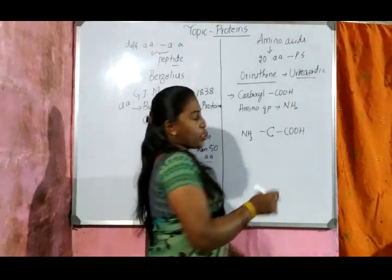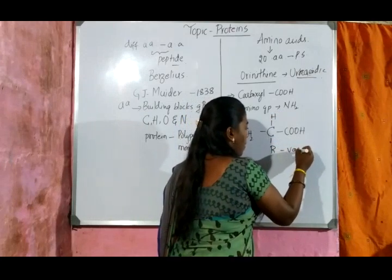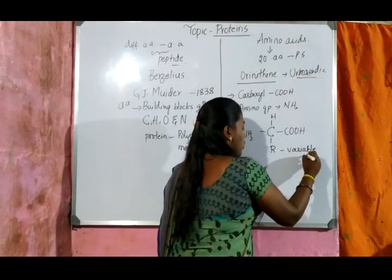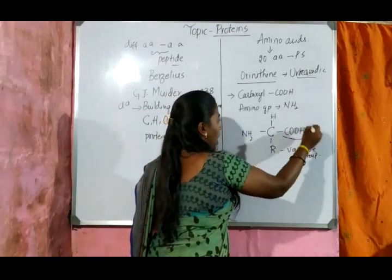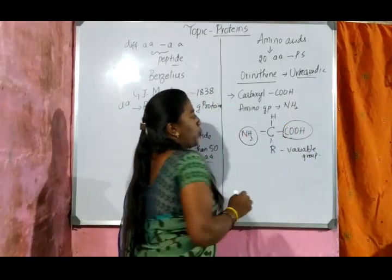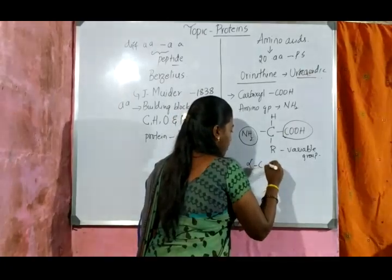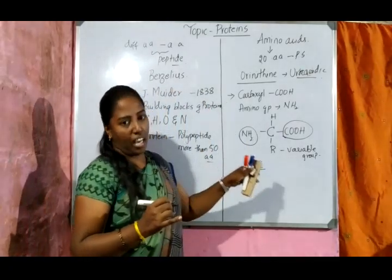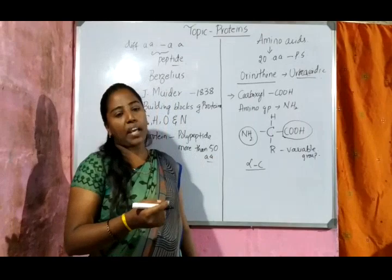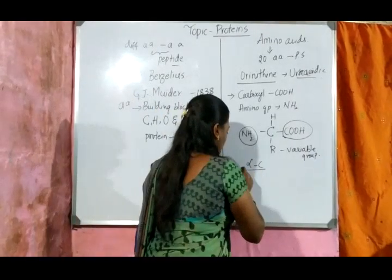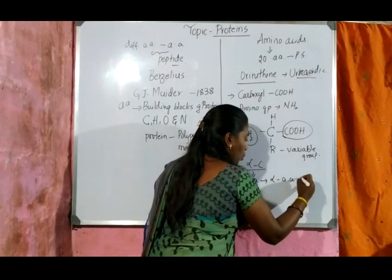In addition to the carboxyl and amino groups, each amino acid also has a hydrogen atom and a variable group represented by R — all attached to the same carbon atom, which is called the alpha carbon. Amino acids that have this alpha carbon are called alpha amino acids.